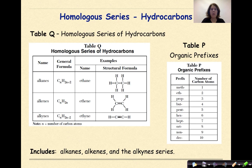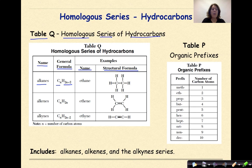You have two reference tables you're going to be using extensively in organic chemistry. The first is Table Q, which is our table for the homologous series of hydrocarbons. It gives you the name, the general formula, the name of the compound used as an example, and the structural formula for the example. For an alkane, the general formula is CnH2n+2, where n represents the number of carbon atoms. Ethane, which has an ANE ending, has all single bonds between the carbons.